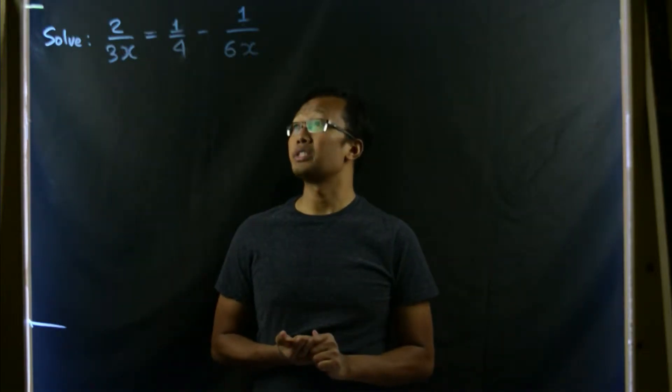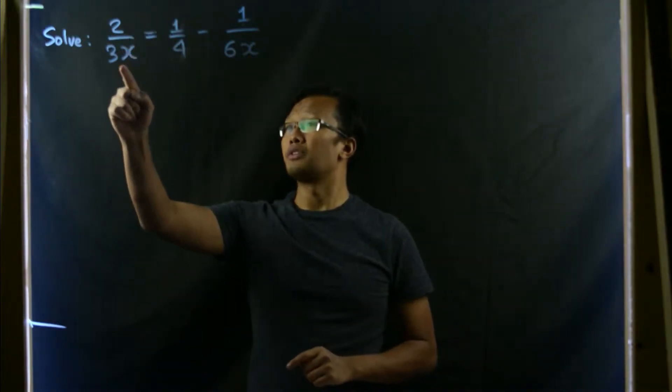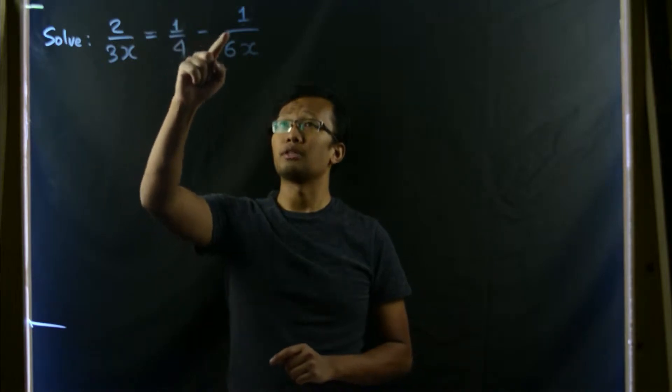Let's solve our rational equation: 2/(3x) = 1/4 - 1/(6x).